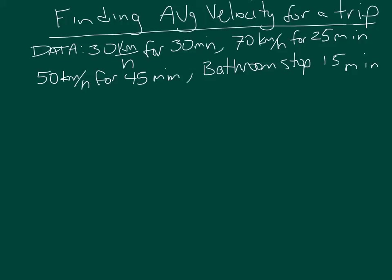We're looking for their average velocity for the entire trip. The first thing we need to do is figure out how far their trip was, so for each of these speeds and time periods we need to find the distance they traveled.